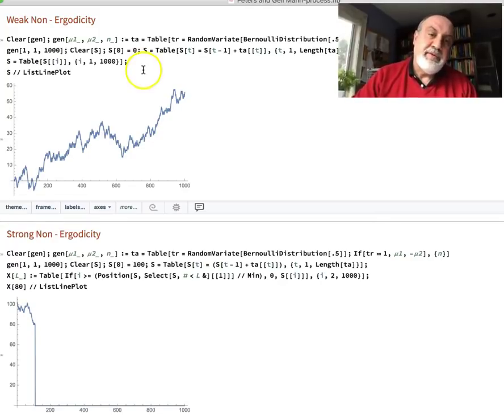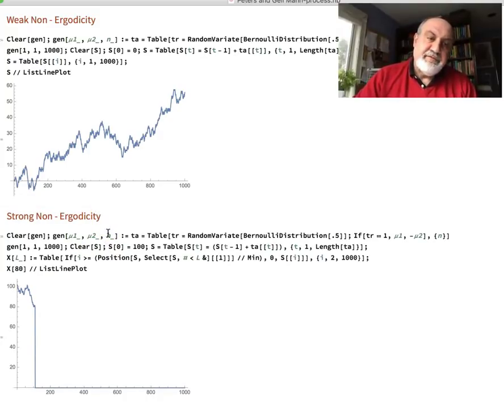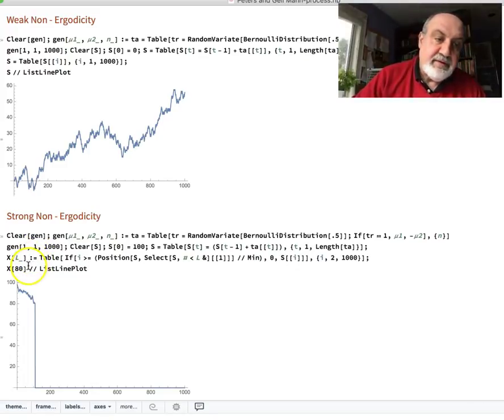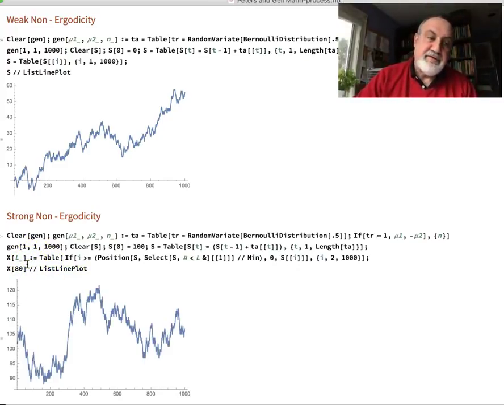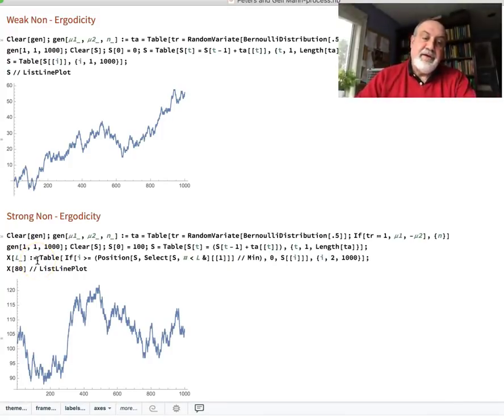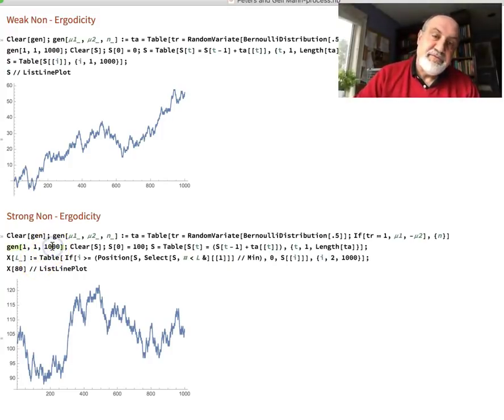Now, strong non-ergodicity. When I look at the bottom graph, I introduce an absorbing barrier. In other words, the minute you hit a certain price—say here, 80—you go to zero. That's it, you go to jail and stay there.